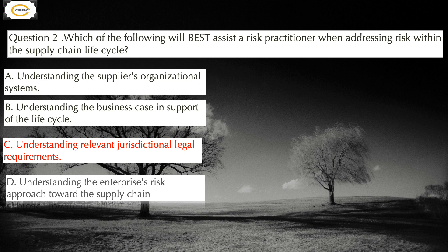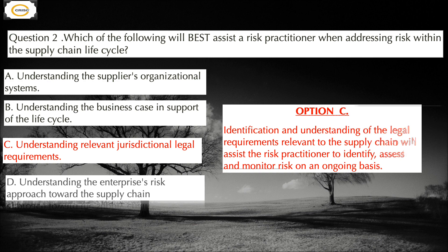The correct answer is option C: understanding the relevant jurisdictional legal requirements. Option A is incorrect because understanding the supplier's organizational system is important but would not be the best means to assist a risk practitioner when addressing risk within the supply chain life cycle. Option B is incorrect because the business case in support of the supply chain life cycle is created prior to the agreement of the requirements between the enterprise and the supplier. Option C is correct because identification and understanding of the legal requirements relevant to the supply chain will assist the risk practitioner to identify, assess, and monitor risk on an ongoing basis.